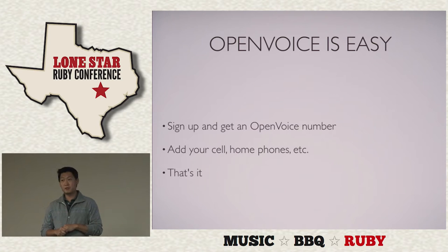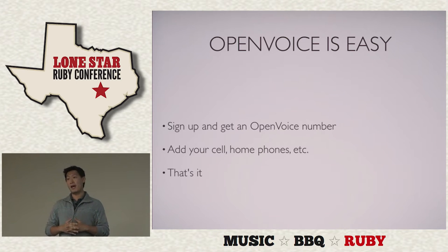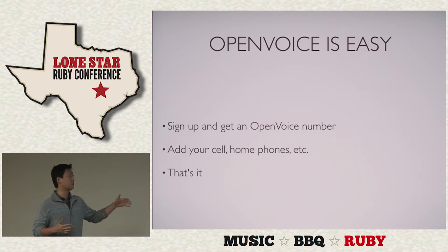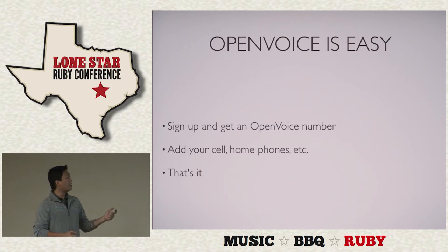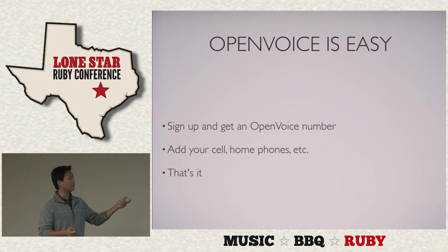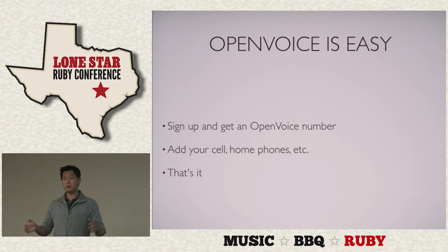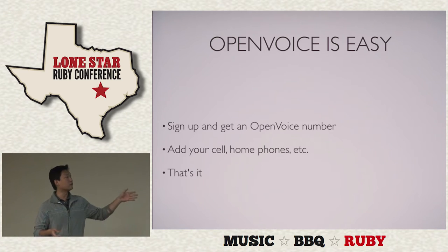The first characteristic of Open Voice is it has to be easy. Because of the user provisioning we just recently added, it is very easy — just three steps. First, you go to the website and sign up, and it automatically provisions you an Open Voice phone number, which is a virtual number but looks just like your cell phone or home number. Then you go to the phone numbers page and add your cell phone numbers, your home number, your office number. When someone dials your Open Voice number, it's going to ring all your phones. So Open Voice is easy.